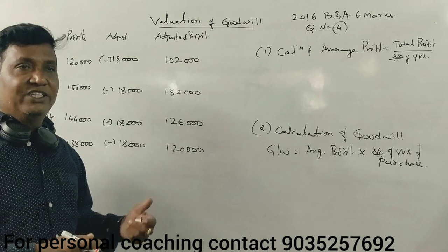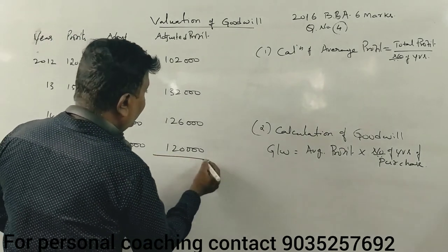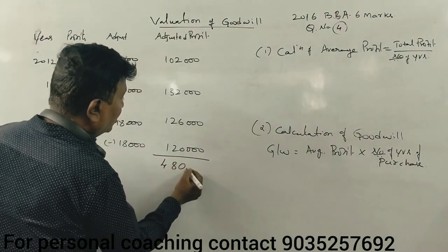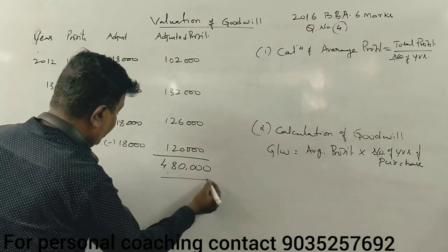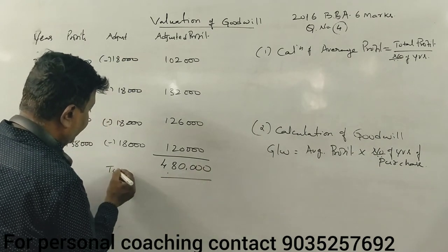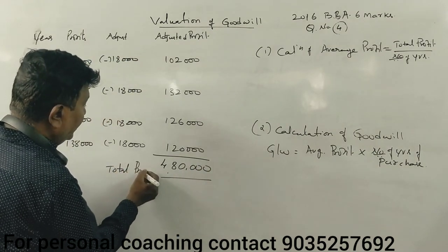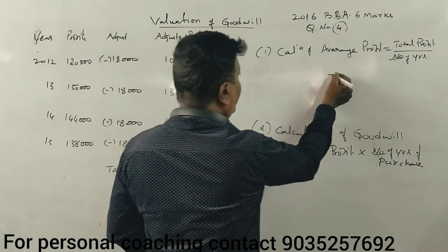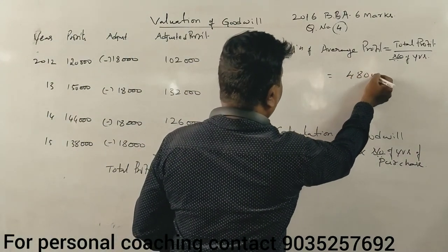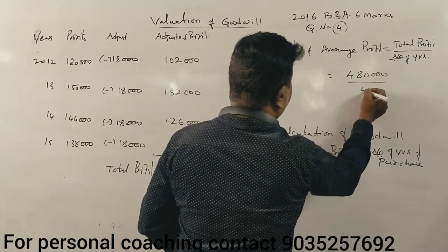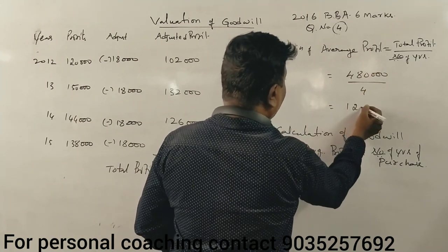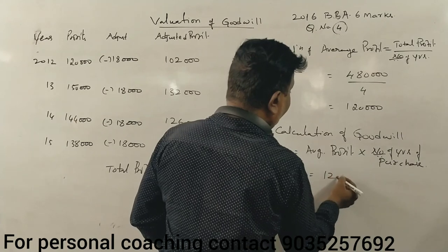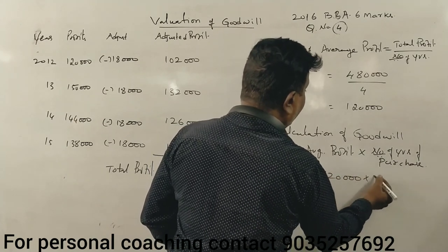This is the simple average. Total profit: 4,80,000. Is it correct? The average profit is total profit divided by the number of years — 1,20,000. The average profit divided by 3 years is 3,60,000.